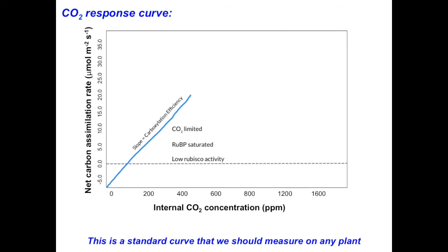I also want to point out a slightly unusual part of the graph: there is a dashed horizontal line at zero net carbon assimilation rate. The point where the curve crosses this line is called the CO2 compensation point. At this exact point, respiration and photosynthesis balance each other. Once the curve gets above this dashed line, there is more photosynthesis happening than respiration, giving us a positive net carbon assimilation rate.